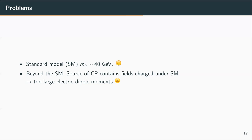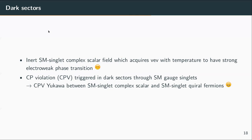In these kinds of baryogenesis scenarios there are very strong constraints from the electric dipole moment, which almost excludes these kinds of models. For example, supersymmetry is already excluded for explaining low-energy baryogenesis. We can escape these constraints if we use the dark sector to accomplish two important ingredients for baryogenesis: first, having a strong electroweak phase transition — this can be accommodated if we impose the presence of a new inert Standard Model scalar singlet that couples with the Higgs doublet.